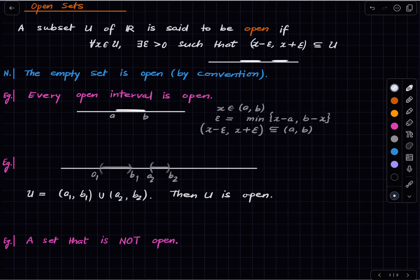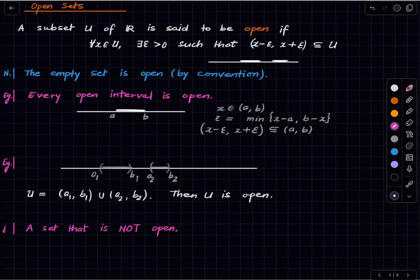You may want to write a formal proof of that, but it is very easy. Now let us look at an example of a non-open set. The simplest example would be a singleton: define U = {3}. This is not an open set because if you make a room around 3 — choose a positive epsilon and consider the open interval centered at 3 with radius epsilon — that interval will not be contained in U.